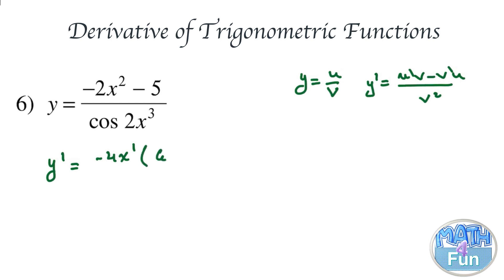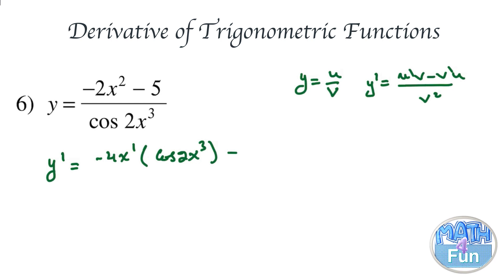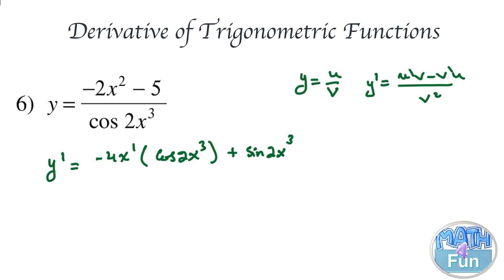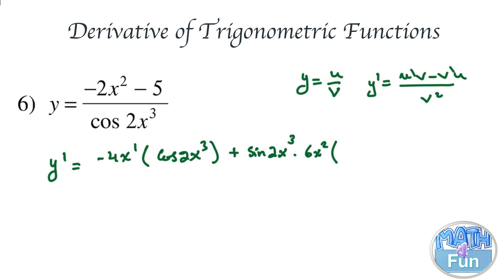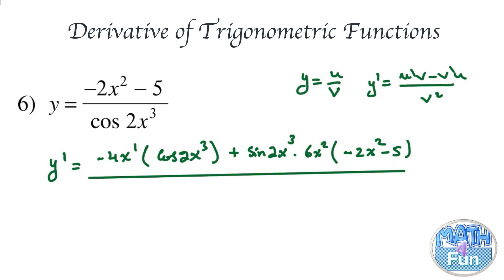Applying this: u prime is minus 4x to the power 1, and the derivative of minus 5 is 0. All times cosine 2x cubed as it is, for the u prime times v term. Then minus v prime times u: the derivative of cosine 2x cubed is minus sine 2x cubed, so minus and minus gives plus sine 2x cubed. Don't forget to apply chain rule: the derivative of 2x cubed is 6x squared, so times 6x squared, all multiplied by minus 2x squared minus 5. Divided by v squared, which is cosine of 2x cubed, all squared.